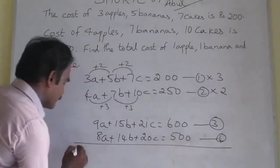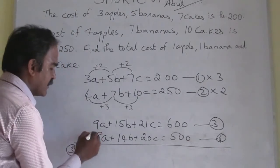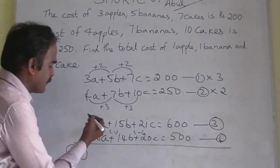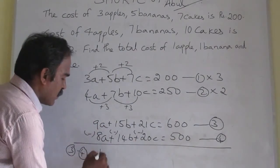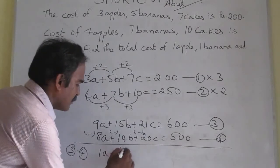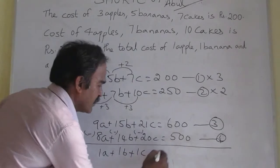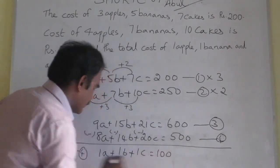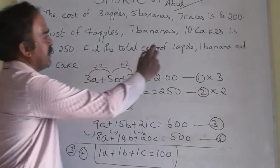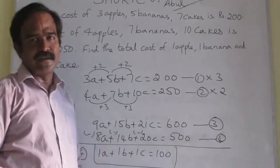Now let us do equation 3 minus equation 4. You have to change the symbols here — plus and all change to minus. 9A minus 8A is 1A. 15B minus 14B is 1B. 21C minus 20C is 1C. So the answer is Rs. 100. The total combined cost of 1 apple, 1 banana, and 1 cake is Rs. 100.